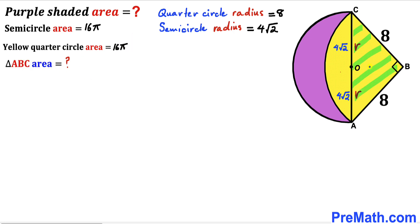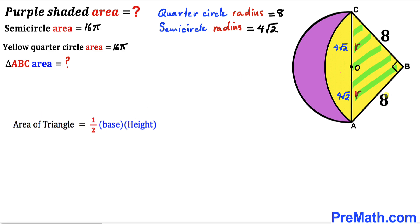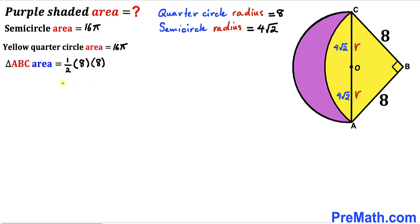Next, let's calculate the area of right triangle ABC. Using A = ½ × base × height, with base = 8 and height = 8: ½ × 8 × 8 = 32. So the triangle ABC area is 32 square units.